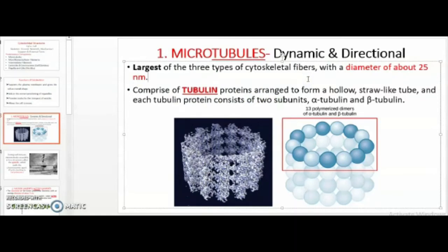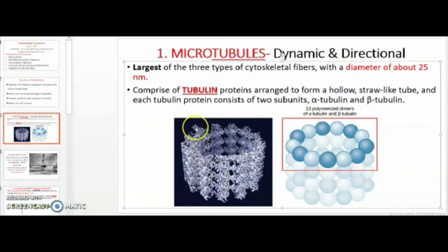Microtubules are made up of tubulin proteins which form a hollow straw-like tube. Each tubulin has two components: the alpha and the beta subunits. So the entire body of the straw is made up of the tubulin components, and this is how it appears under the electron microscope.